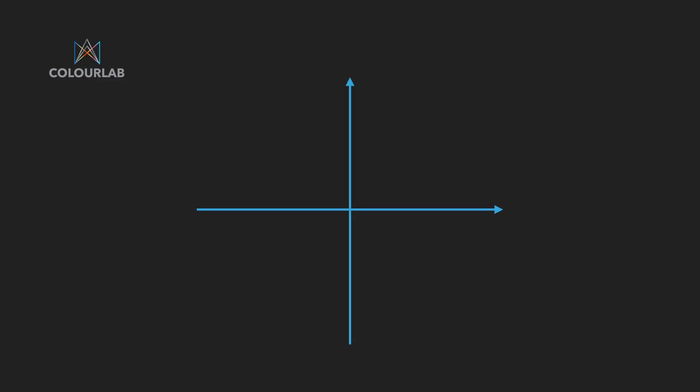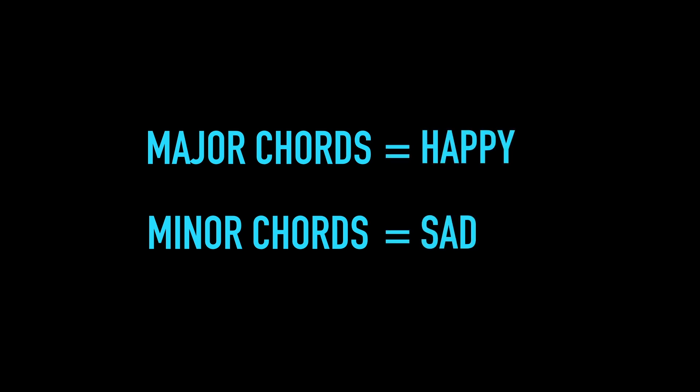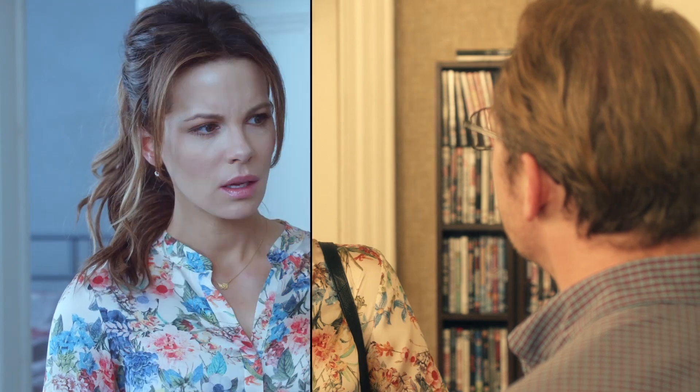Now let's have a look at the second axis, which is called temperature. Temperature is also an equivalent in music of harmony. In music, we have major chords and minor chords — a major being a happy chord and a minor being a sad one. The same concept works with colors. Warm colors, the colors around oranges, yellows, and reds, are going to evoke a positive, happy emotion. And cool colors, colors around cyan, blue, and green, are going to give us a negative emotion — a fear and a danger.